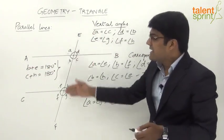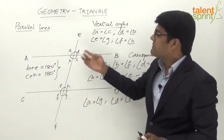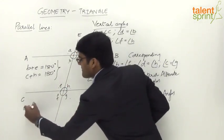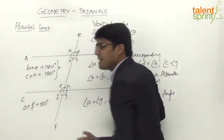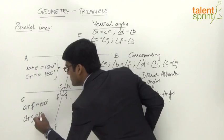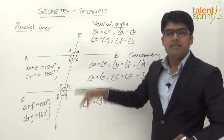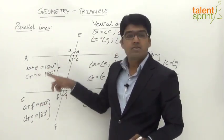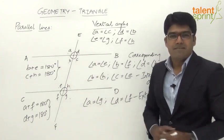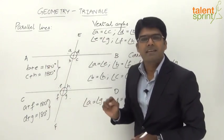Similarly, exterior angles on the same side are also supplementary. The exterior angles are A, D, F, G. Exterior angles on the same side: angle A plus angle F equals 180°, and angle D plus angle G equals 180°, making these supplementary pairs as well.